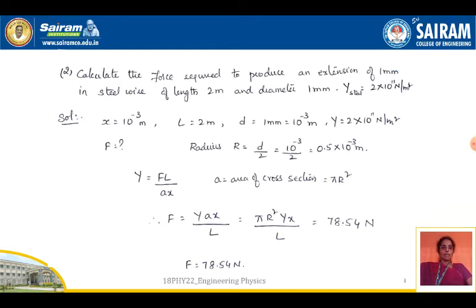Length is 2 meters and diameter is 1 mm, converting to meters D = 10⁻³ meters. Young's modulus Y = 2 × 10¹¹ Newton per meter square is already given. Since diameter is given and we need radius: R = D/2 = 10⁻³ / 2 = 0.5 × 10⁻³ meters.